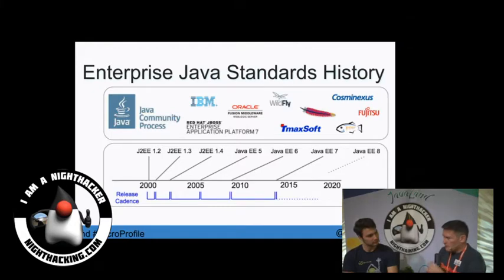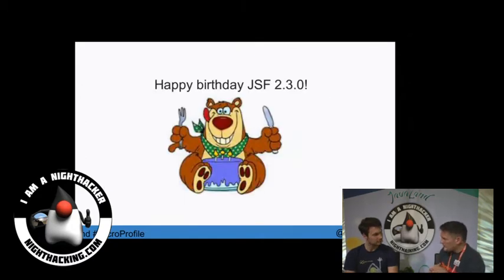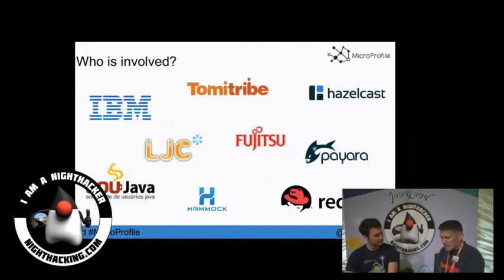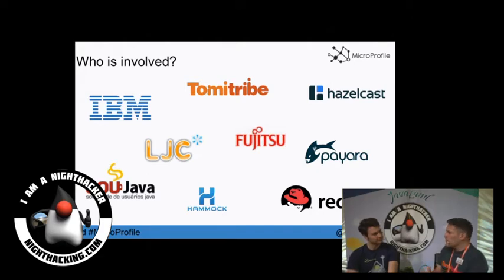MicroProfile is kind of an answer to running microservices on the EE platform — how are we going to do microservices? We all do microservices now. MicroProfile is basically a collaboration of vendors. These are the organizations involved right now — you can see some really quite interesting, quite big names in this project. We all already do microservices in some way, but being an EE platform we want to standardize it, and we need to do it now.